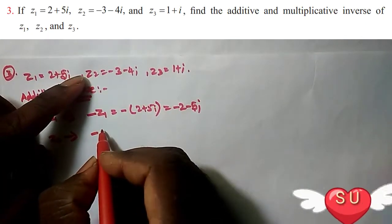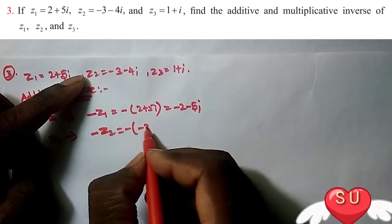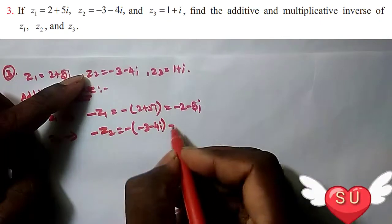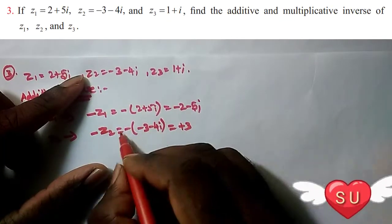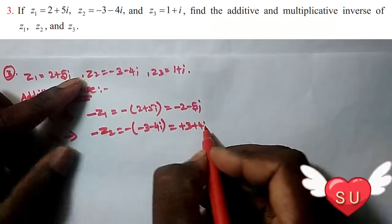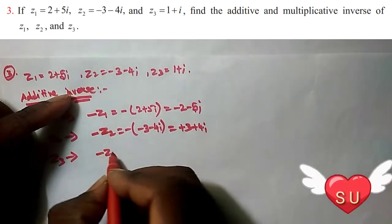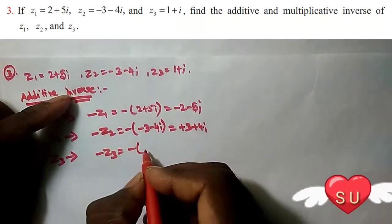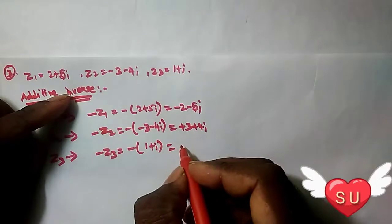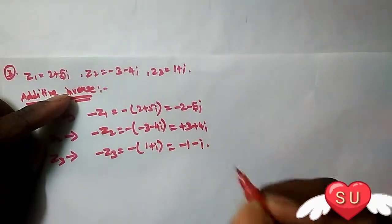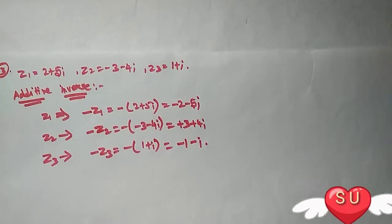The additive inverse of z₂: minus z₂. z₂ is -3 - 4i, so minus times minus gives plus: 3 + 4i. Next is z₃, the additive inverse is minus z₃. The value of z₃ is 1 + i, so minus into this gives -1 - i, which is the additive inverse.